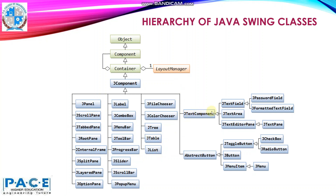There are text components as well, the root of which is JTextComponent. Among the text components, JTextField is there, which in turn has the specializations JPasswordField and JFormattedTextField. Then there are JTextArea and JEditorPane. There are also a number of button classes whose root is AbstractButton. Then ToggleButton is there, among which JCheckBox and JRadioButton are present. Then JMenuItem is there. So this is all the hierarchy of Java Swing classes.